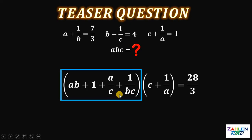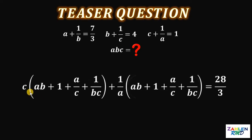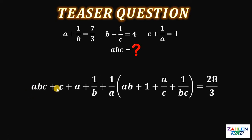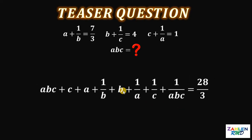Next, we do chunk multiplication again, distributing this result to C plus 1 over A. We get C times the whole thing plus 1 over A multiplied by the expression. Distributing C gives ABC plus C plus A plus 1 over B. Distributing 1 over A to (AB + 1 + A/C + 1/(BC)) gives B plus 1 over A plus 1 over C plus 1 over ABC.